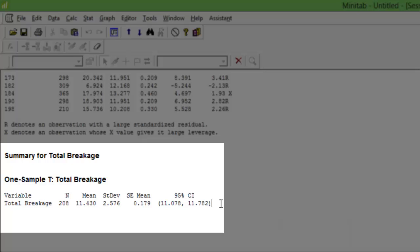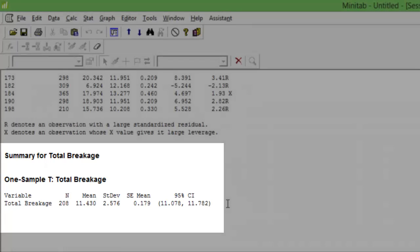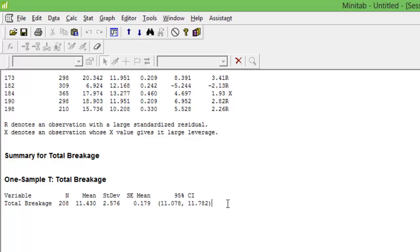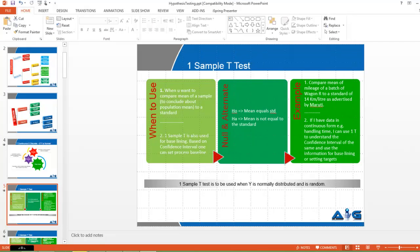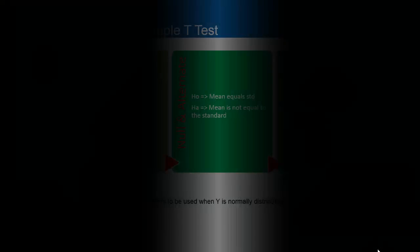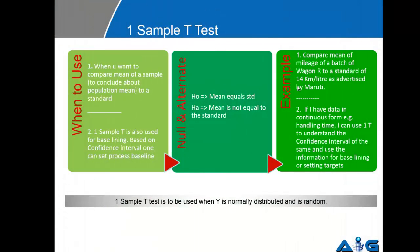This is the sample mean. It estimates where the population mean is likely to lie. Here it says that the population mean is expected to lie between 11.07 to 11.7. If your target is anywhere between this, if your standard is anywhere between this, it is null hypothesis, meaning the mean equals the standard.